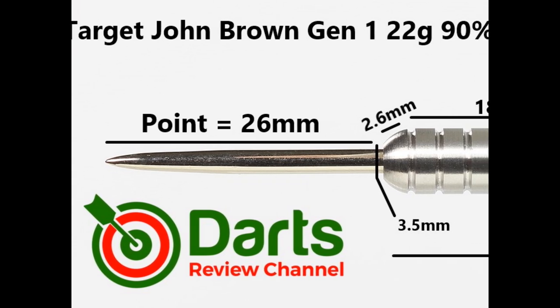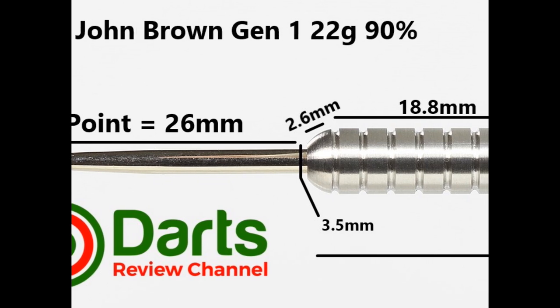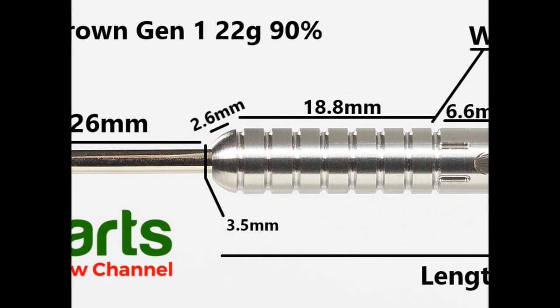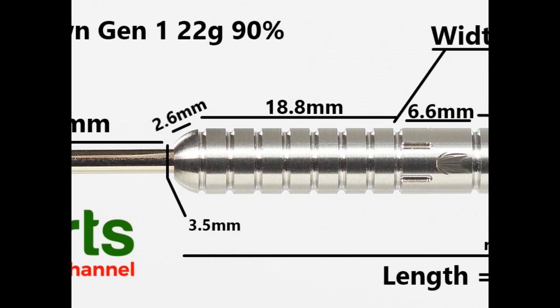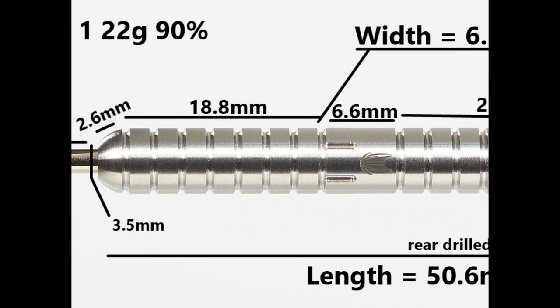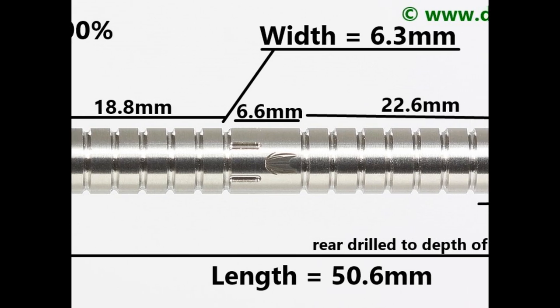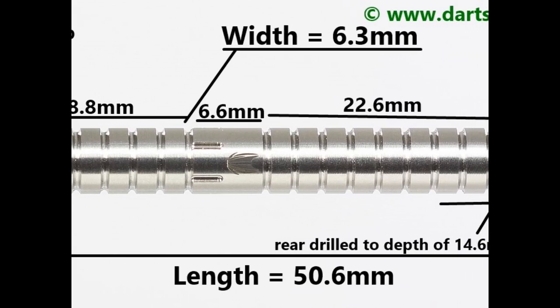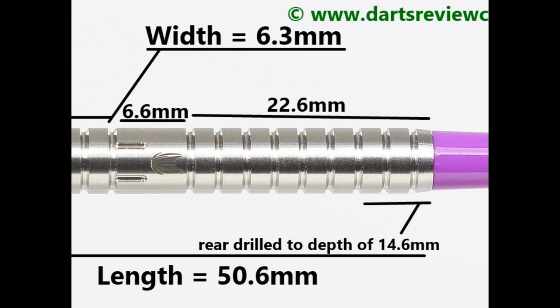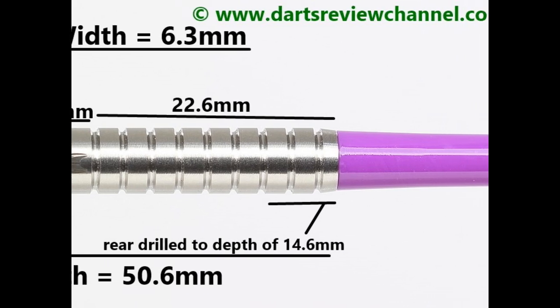So the dart's fitted with a 26mm silver point. There's a slight tapered bull nose that's 2.6mm and then you've got the first section of the flat ring grip that's 18.8mm. Around the middle you've got a wider section with some short notches cut through and the Target logo, that's 6.6mm. On the rear it continues the same grip from the front, that's 22.6mm with just a small taper on the end. Length is 50.6mm, width is 6.3mm.